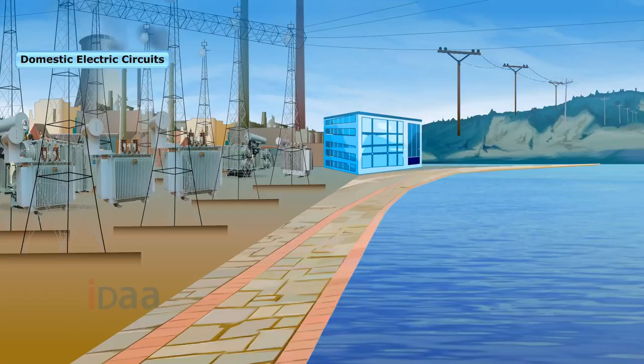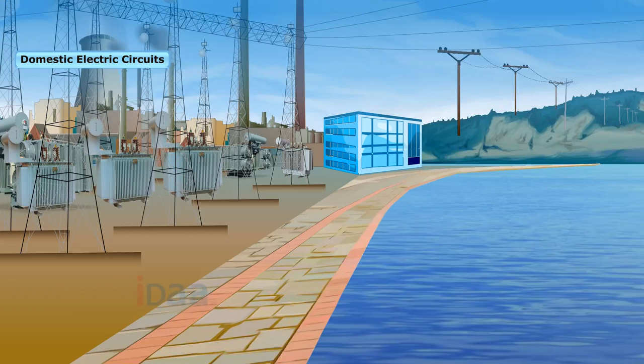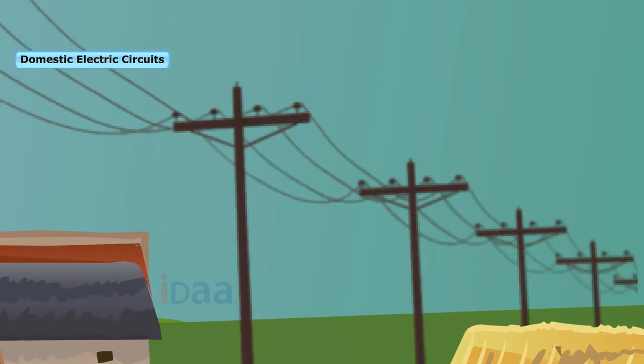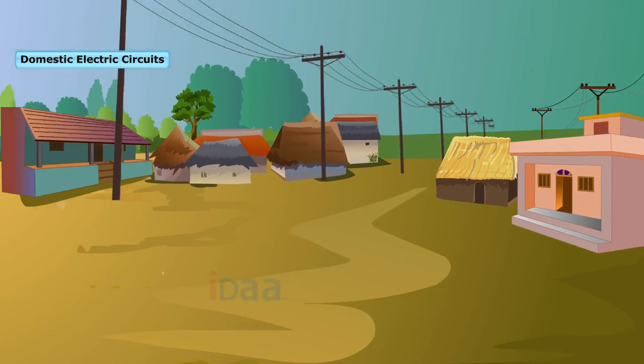Domestic Electric Circuits. The supply from which we receive the current for our houses is called the mains. The mains are connected to the power meter from which they are connected to the wires of the house.